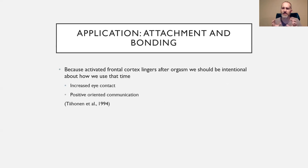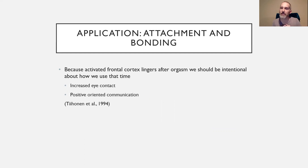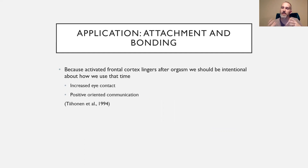Regarding bonding and attachment — we talked about how activation settles down and can form new connection pathways. If we want to be intentional about using that, we should have increased eye contact and positive-oriented communication after sex. It's not the time to storm out or get into an argument. We can be intentional about eye contact, talk positively, and use that bonding window to let both highly activated frontal cortexes synchronize and form together with the mirror neurons.